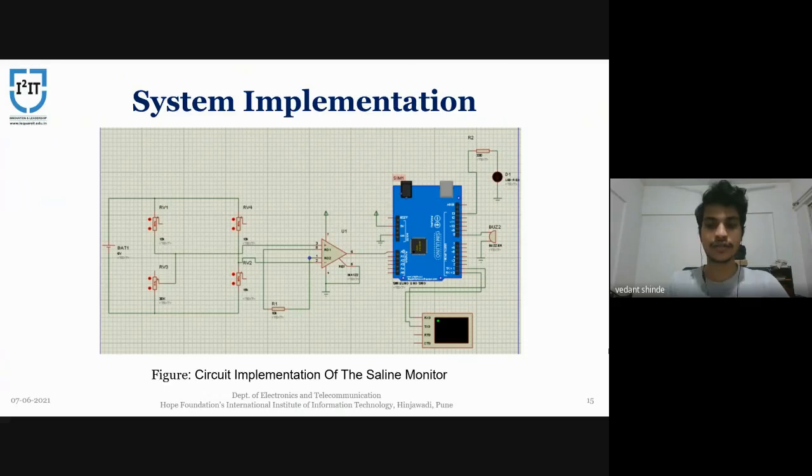Now, this electric signal is provided to the amplifier, which then in turn amplifies the signal and provides it as an input to the microcontroller. Now, the monitor terminal continuously displays the volume of the IV bottle. Once the IV bottle volume is at 64 ml or less, the buzzer and the LED turn on.